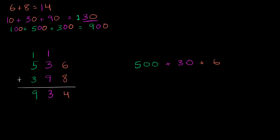Likewise, this 3 represents 300. This 9 is nine tens, or 90. And this 8 just represents eight ones, or eight. And now we can add these two up.